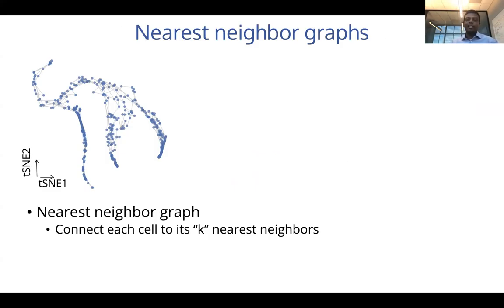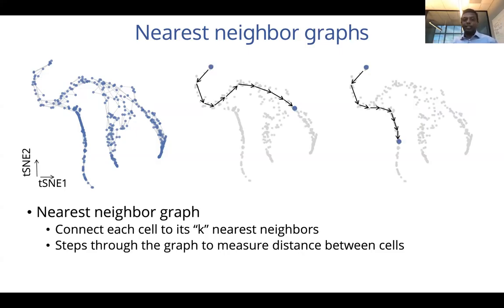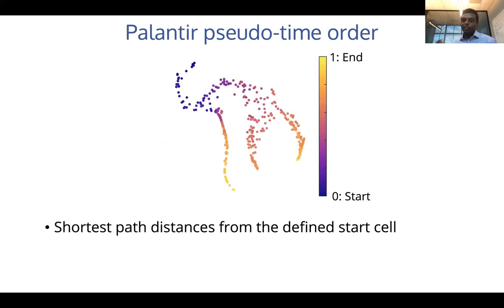For any cell, we connect it to its k nearest neighbors. Given that we know the property of the graph, we can take steps through the graph to measure distances between cells. Because we know the identity of the start cell, we can compute shortest-path distances from this predefined start cell to compute the developmental progression, giving us a unified pseudotime order across all cells of the system.